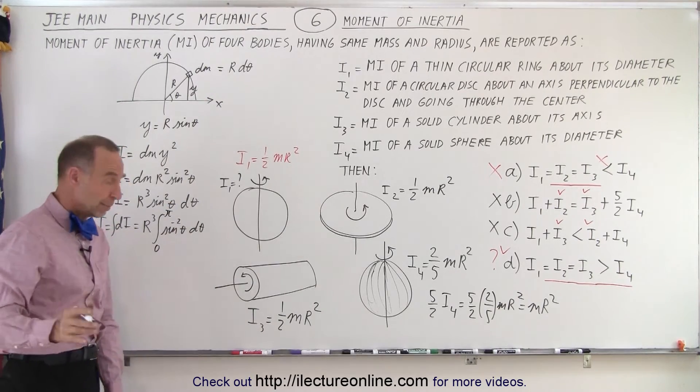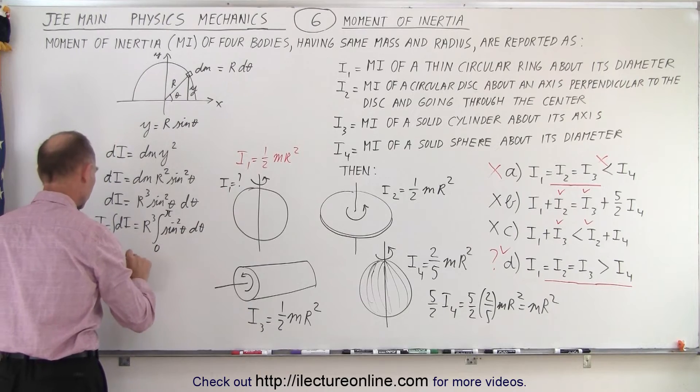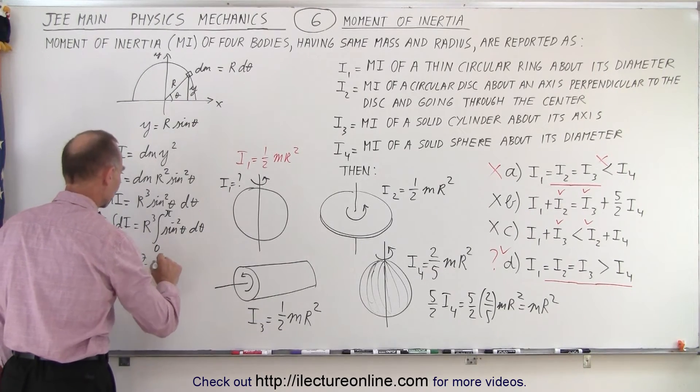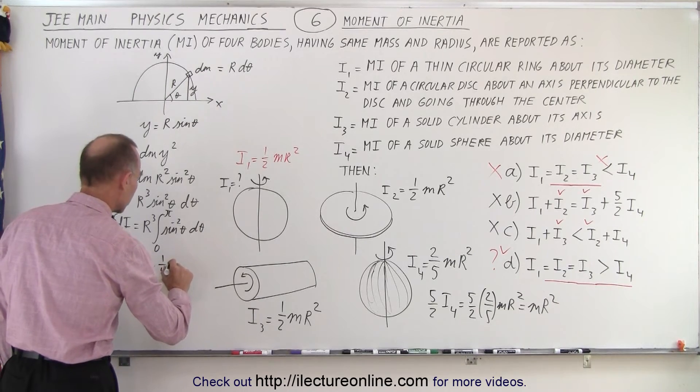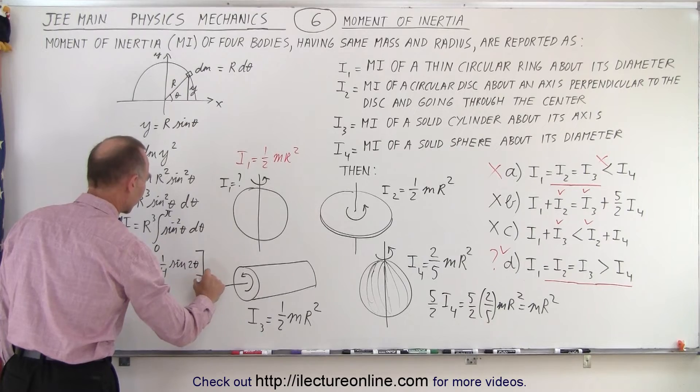Now, hopefully you remember the integral of sine square of theta. So this would be equal to r cubed times theta divided by 2 minus one quarter the sine of 2 theta evaluated from zero to pi.